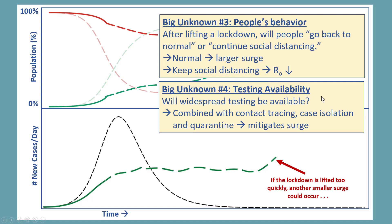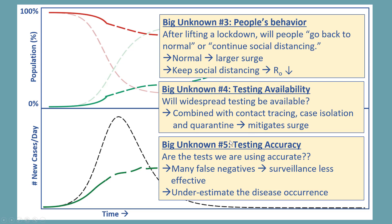There's another big unknown: testing availability. When widespread testing is available, combined with contact tracing, case isolation, and quarantine of contacts, those actions together mitigate the surge and decrease R0. However, we are not sure how accurate these tests are. There are many companies developing tests, and some are validating them in not a very scientific way. If there are many false negatives, then our surveillance is going to be less effective — we won't be catching all the cases. Our contact tracing and all the surveillance efforts that we do will be less effective, and it further underestimates disease occurrence.